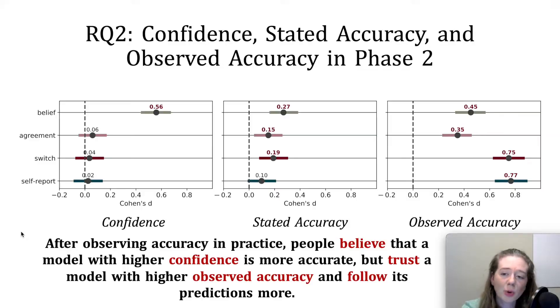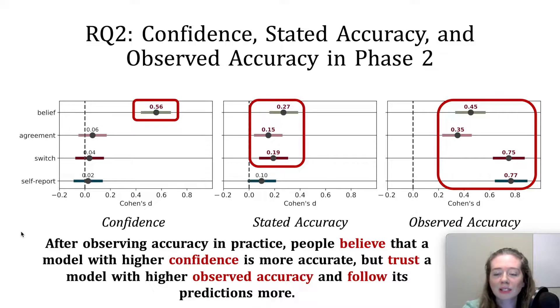Consistent with phase one, we found that subjects still tended to believe that models producing higher levels of confidence are more likely to be correct in phase two, but we found no evidence that model confidence has any impact on the other three trust measures. On the other hand, higher stated accuracy was found to lead to higher belief in model accuracy, agreement fraction, and switch fraction, while a higher observed accuracy led to increases in all four trust measures.